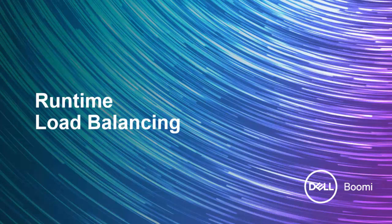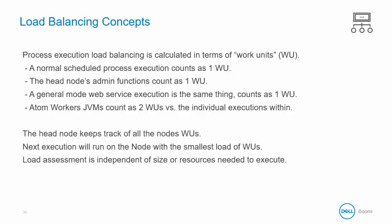In this section we take a look at runtime load balancing. Now that we know that executions can be run across multiple nodes and JVMs on each node, let's look at how these executions are distributed across the nodes. Load balancing is done by the head node of the cluster. We think in terms of work units, and this is how it works.